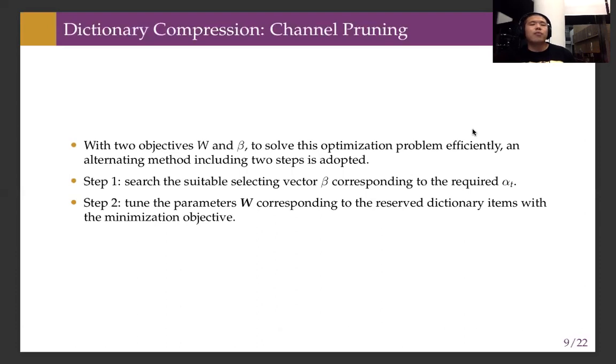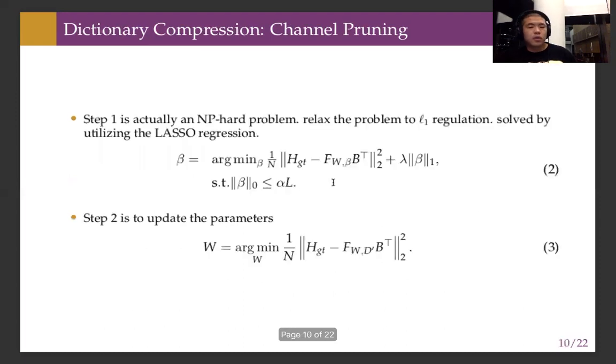For this step, we iteratively update the network parameters and the selection vector, which shows which dictionary layers to use. We do pruning only on the dictionary because that's the most time-consuming part. We select which layers of the dictionary need to be ignored.